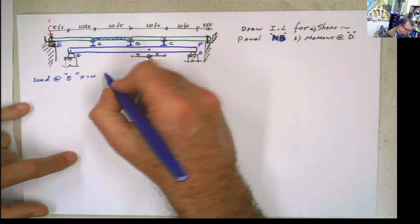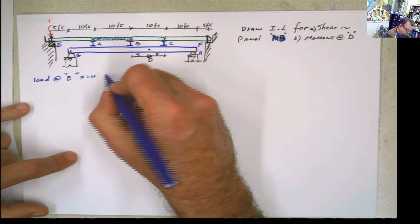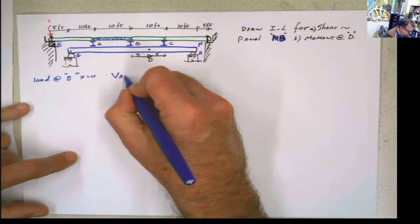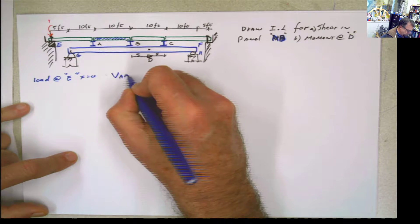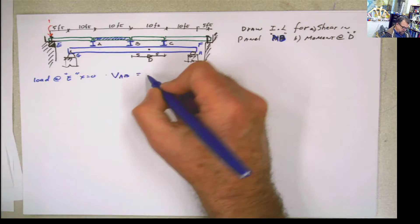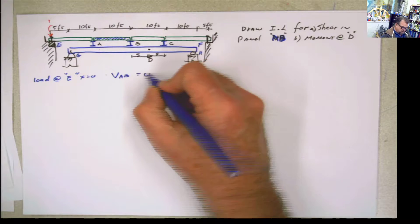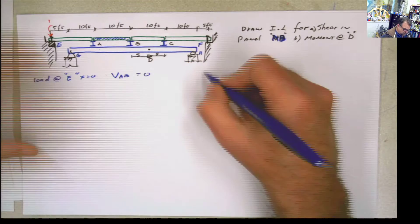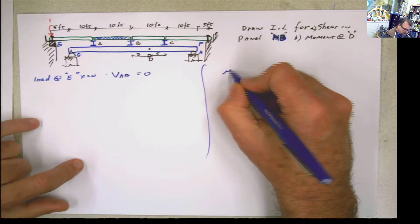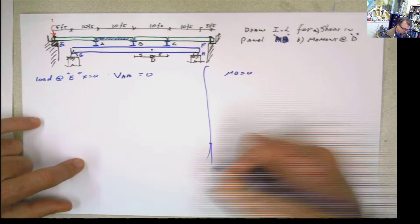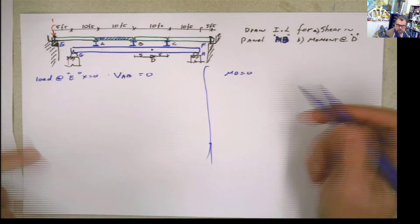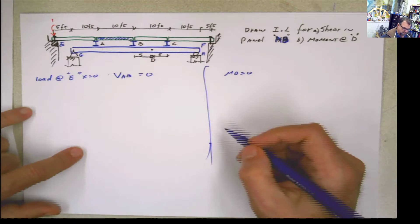So all values are 0. If this is the AB panel I'm working, everything here is going to be 0. And also the moment here is going to be 0, because there is no load on top of the girder.